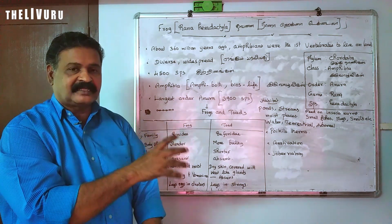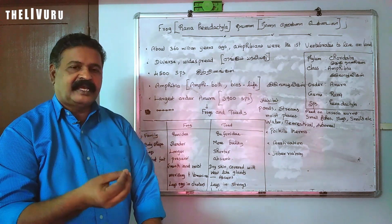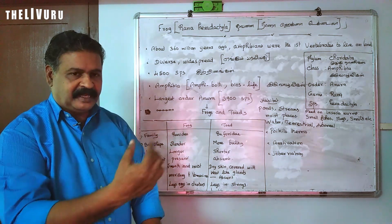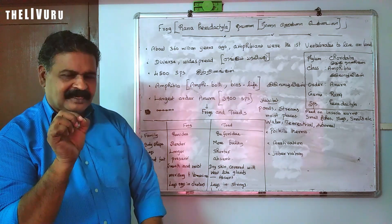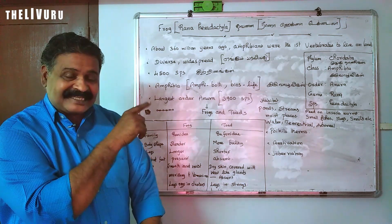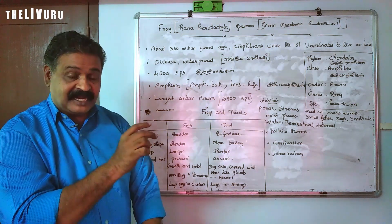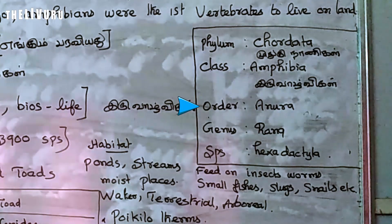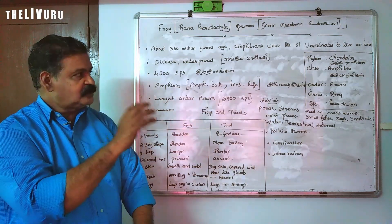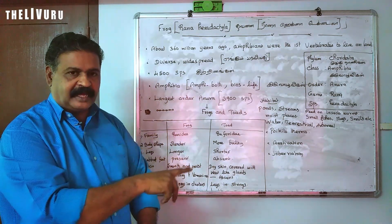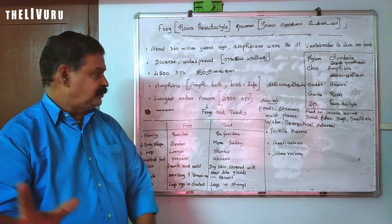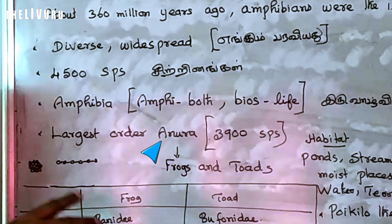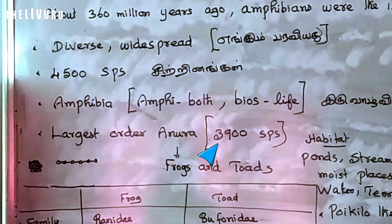There are 4 limbs. Rana hexadactyla has 5 digits plus 1 rudimentary digit — hexadactyla means 6 digits. Anura is the largest order in amphibians, with about 3,900 species.